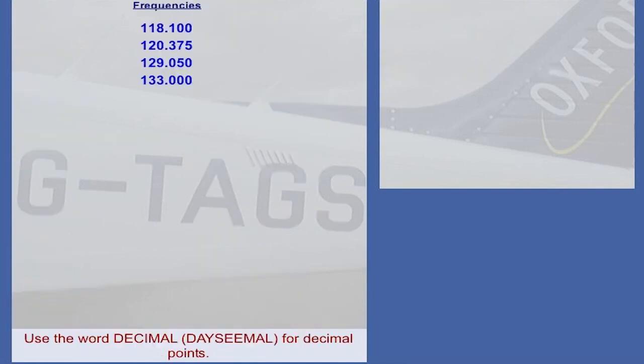Numbers containing a decimal point shall be transmitted with the decimal point in the appropriate sequence indicated by the word decimal, pronounced 'decimal'. A small selection of radio frequencies is shown in the table. Click on a frequency to hear how it's pronounced. The frequencies are pronounced using both types of procedure taught in the lesson on the transmission of frequencies. Use the record playback facility to listen to your own attempts at pronouncing the numbers.